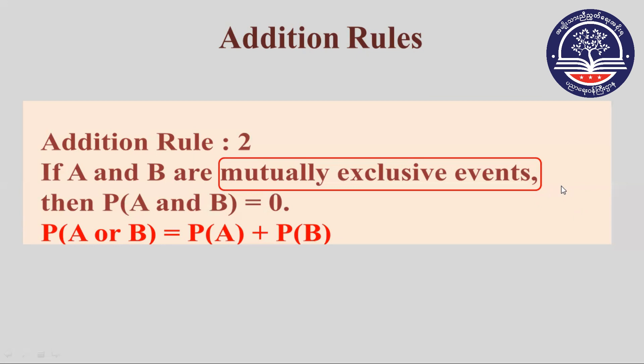The probability of A or B is equal to the probability of A plus probability of B.